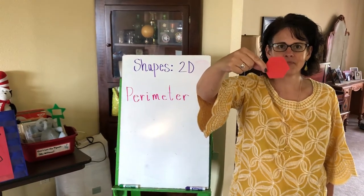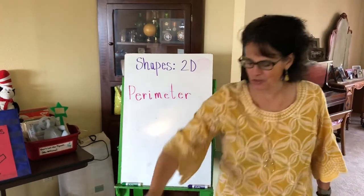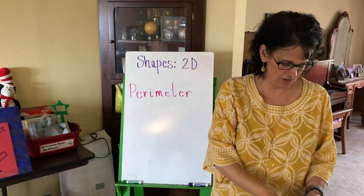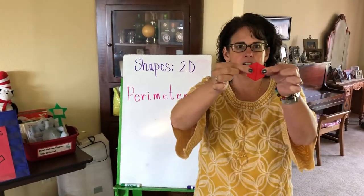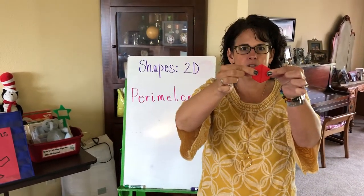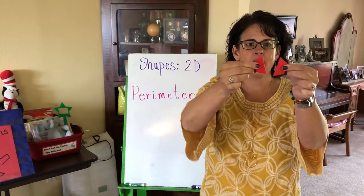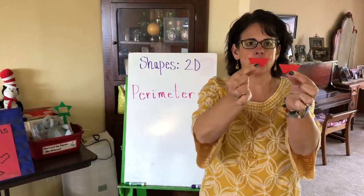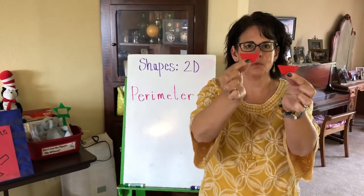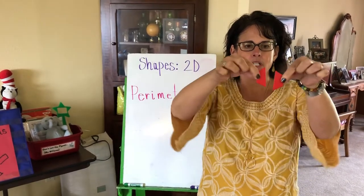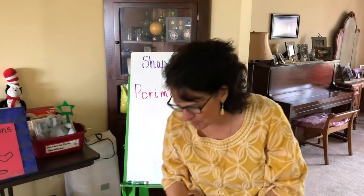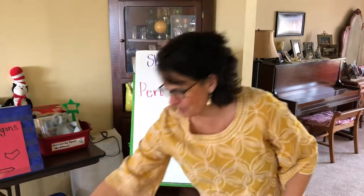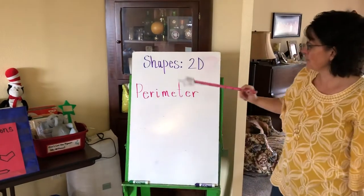Yesterday we studied the hexagon. Can you remember how many vertices? Six! And how many sides? Six! Very good. And our fun fact was: take a pair of scissors, cut the hexagon in half, and you'll get two equal-sized trapezoids.